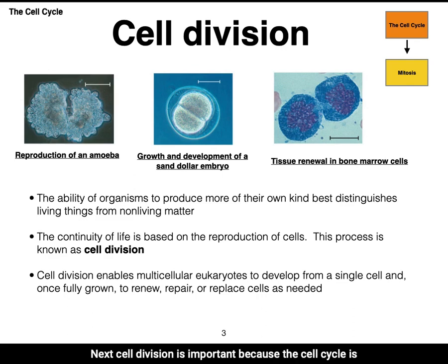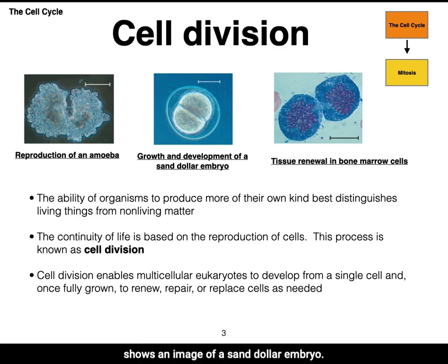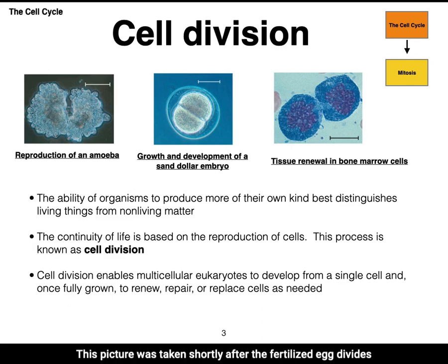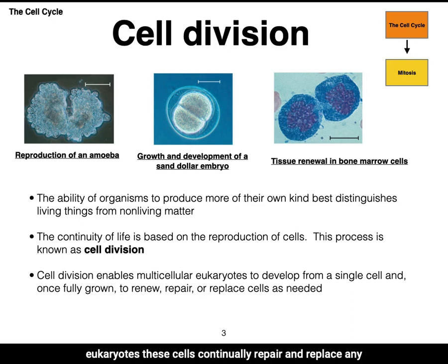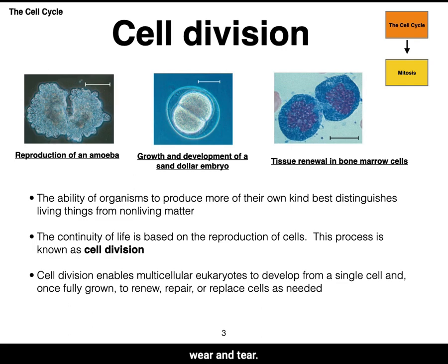Cell division is important because the cell cycle drives growth and development. The middle micrograph shows an image of a sand dollar embryo — a multicellular organism pictured shortly after the fertilized egg divided, forming two cells. Finally, cell division is important for tissue renewal. The last micrograph shows bone marrow cells in fully developed eukaryotes. These cells continually repair and replace any cells that die from accidental deaths or normal wear and tear.